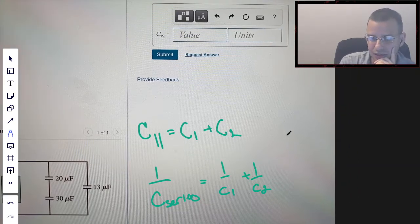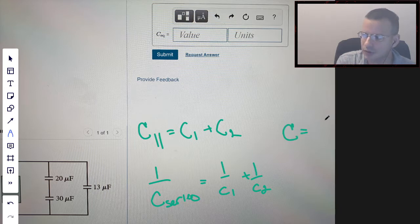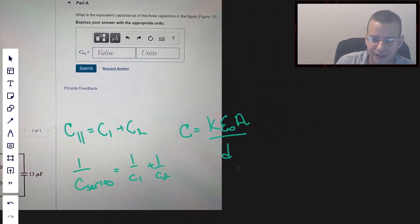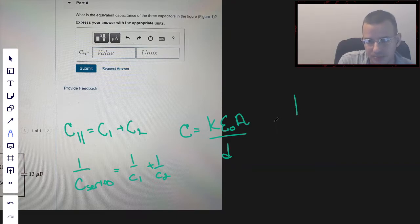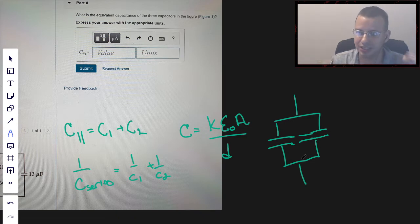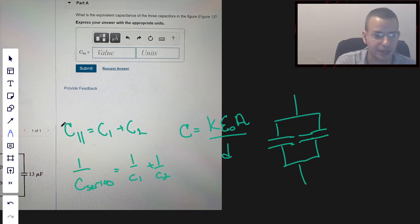The way that I remember this is the capacitance for a parallel plate capacitor is K epsilon naught A over D. If you have two capacitors in parallel, like this, I'm going to draw them so the plates are really close, because a parallel plate capacitor is literally just two conductive plates. That's a parallel plate capacitor.